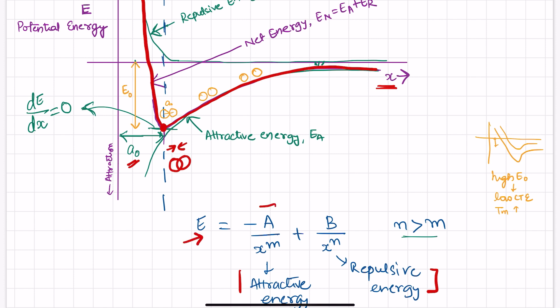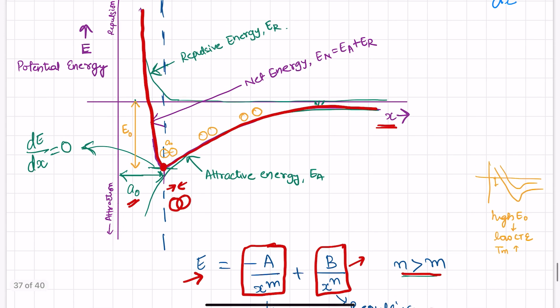The equation has two parts: the first is minus A divided by x to the power m, which is the attractive energy part; the second is B divided by x to the power n, which is the repulsive energy part, where n is greater than m. This shows that the decrease in repulsive energy is fast compared to attractive energy. The attractive energy curve and repulsive energy curve together make the net energy curve.